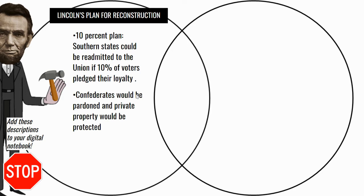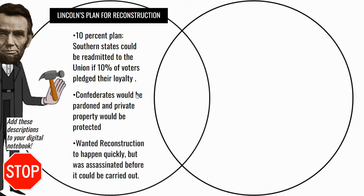Confederates would be pardoned — meaning forgiven — and their private property would be protected. So Lincoln was going pretty easy on Southerners. He wanted Reconstruction to happen really quickly, but he was assassinated before his plan could be carried out. Go ahead and add Lincoln's plan to your digital notebook.